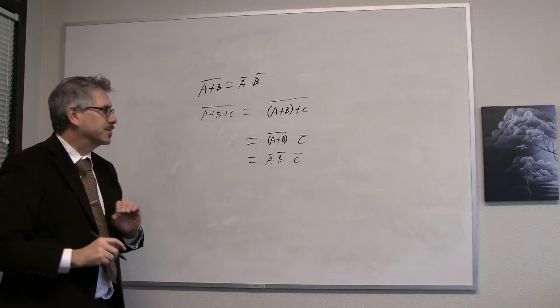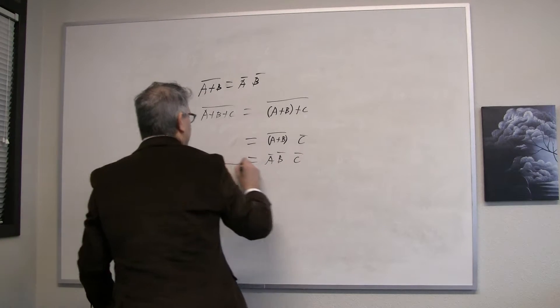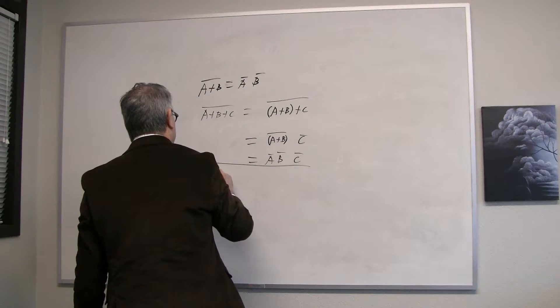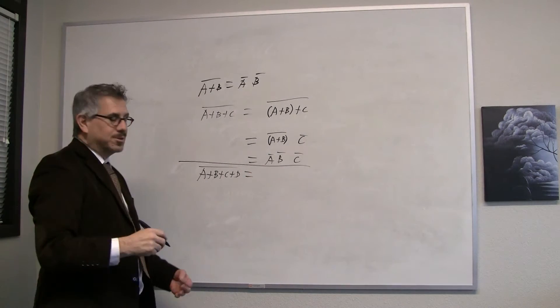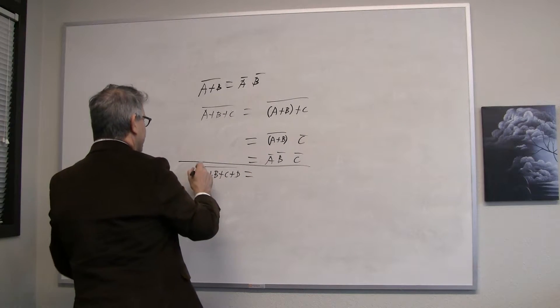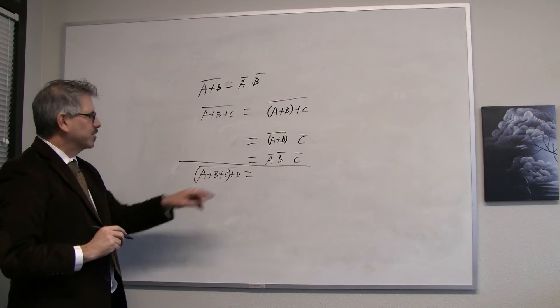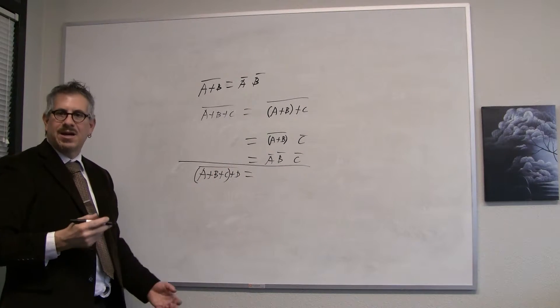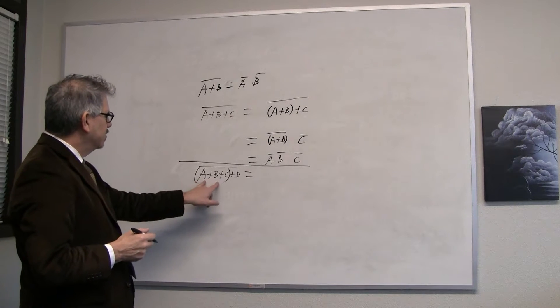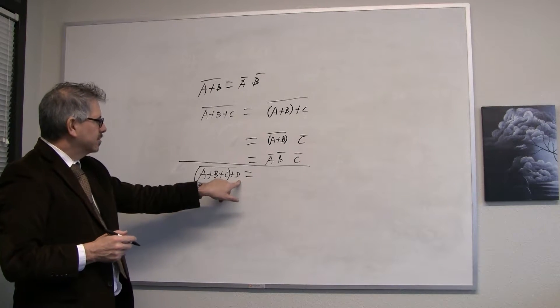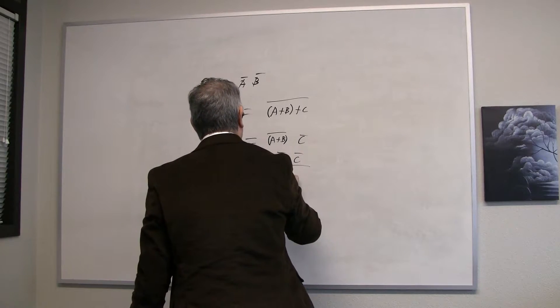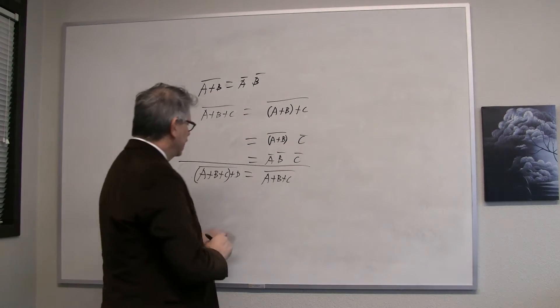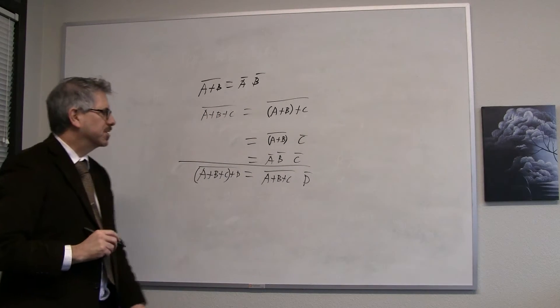Can we get a four variable version? Absolutely. Now we can say A or B or C or D bar, and we can do the same thing. We can break this into this term ORed with D, and now we have De Morgan's Theorem applied to two things, this and this. So that says we get the complement of this first term, A or B or C bar, ANDed with the complement of the second term, D bar.